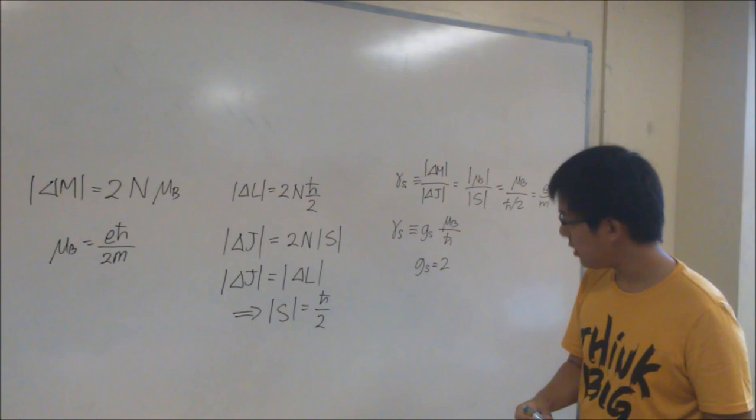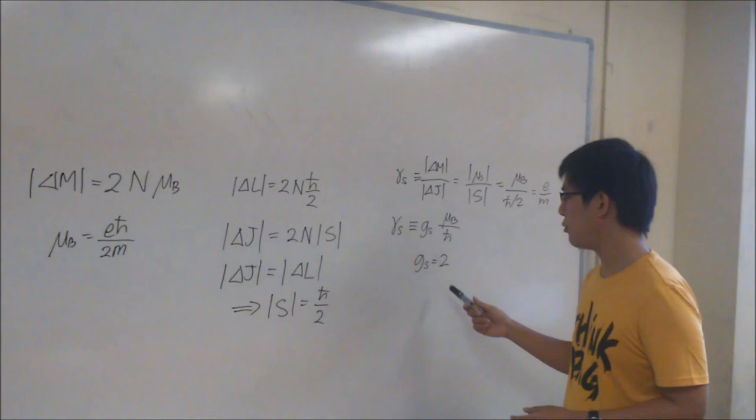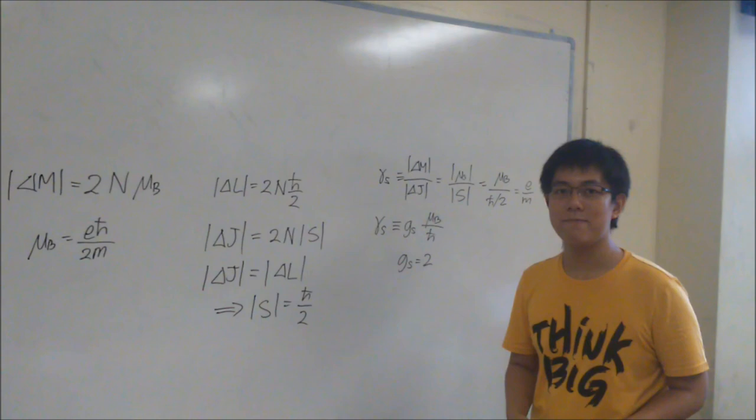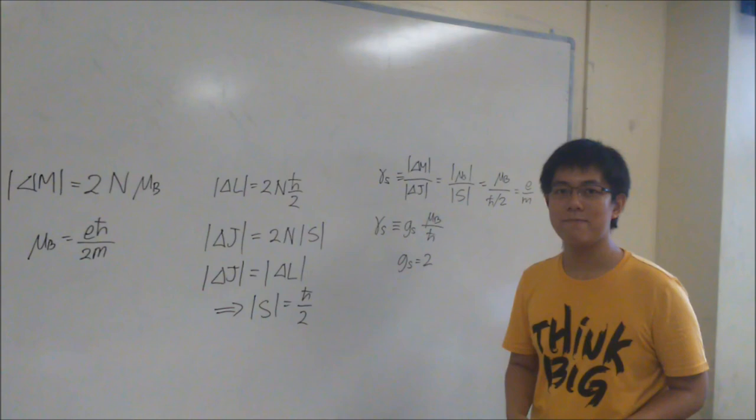So, using this semi-classical model, a simple one, we can obtain a value of 2 which is very close to the prediction from quantum electrodynamics. So, thank you for watching the video. I hope you learned something from the Einstein-de Haas experiment.